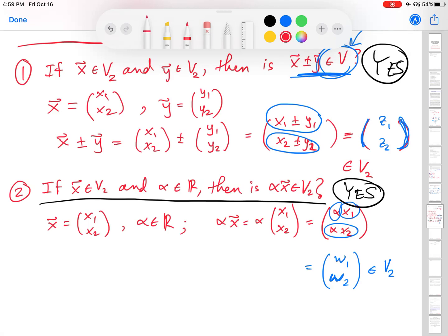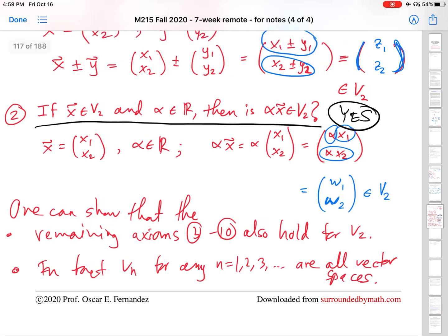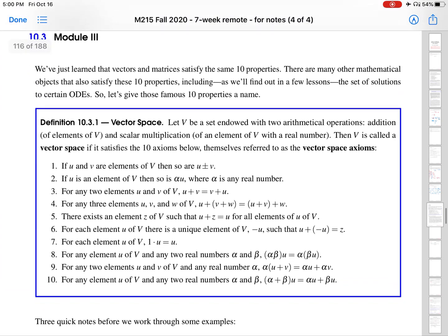The first two axioms are satisfied, and this is that point in the video where I foreshadowed I would say: one can show that the remaining axioms, 3 through 10, also hold for V2. And in fact, Vn for any natural number n are all vector spaces. Again, as I promised, let me just scroll up a little bit and walk you through how you might show some of those remaining axioms, 3 through 10, and help you to think about that.